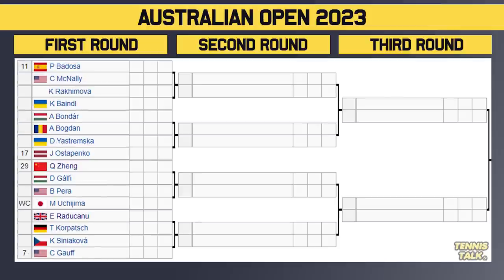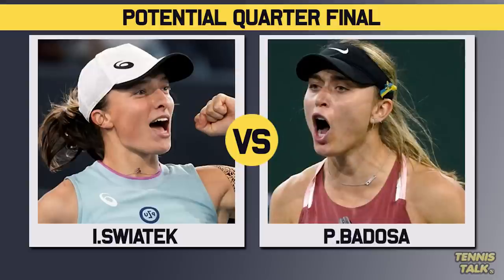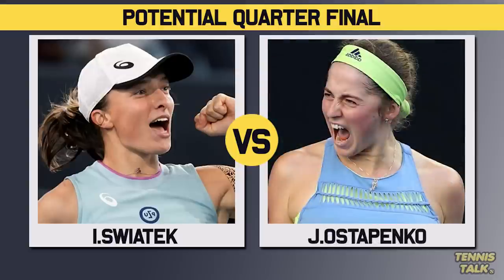Next section of the draw: the 11th seed Bedosa takes on McNally in the first round. Potential second-round opponents include Rakimova or Vandal. Then Ostapenko, the 17th seed, could meet Bedosa in the third round. Zhang, the 29th seed, opens against Gelfel, with the 7th seed Goff potentially reaching the third round against Zhang. By the seedings, Swiatek could face Goff, Zhang, Bedosa, or Ostapenko in the quarterfinal.